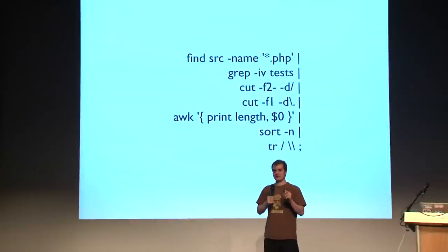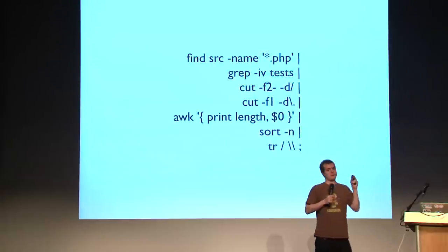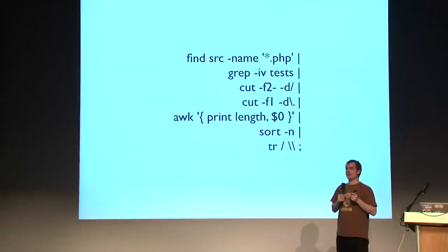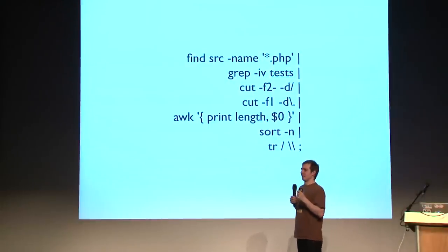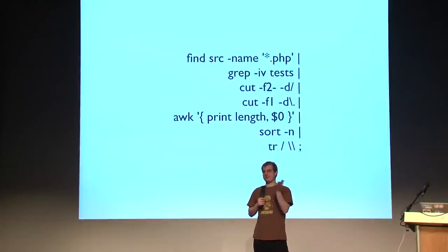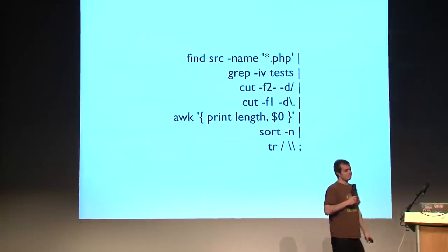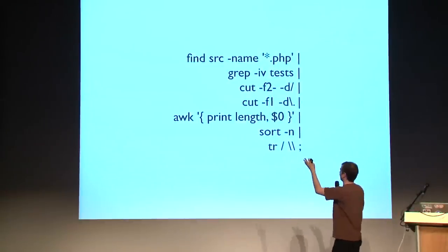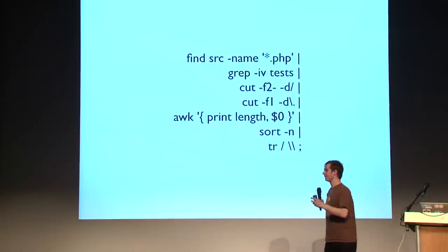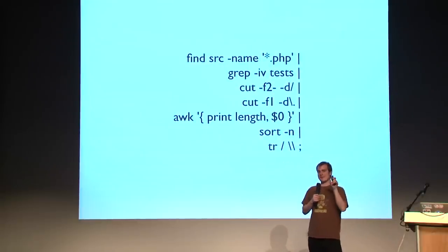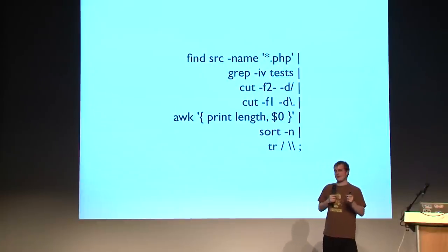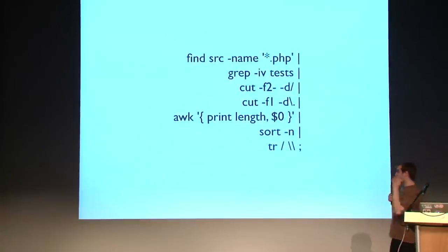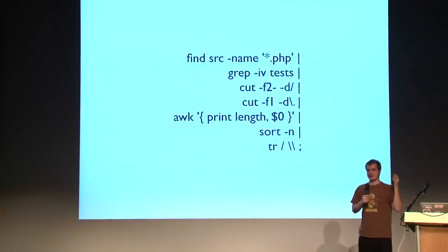We have all of these small, general-purpose programs that do one specific thing, but in isolation they don't have a particular meaning. Grep is just grep — you need to add an argument. Each line does one thing, and only the combination makes it meaningful. This pipeline finds the longest class name in a PHP project — if you're using Symfony or Zend Framework, you'll get pretty long lines. The nice thing is you can program at a very high level without writing actual C or PHP code.